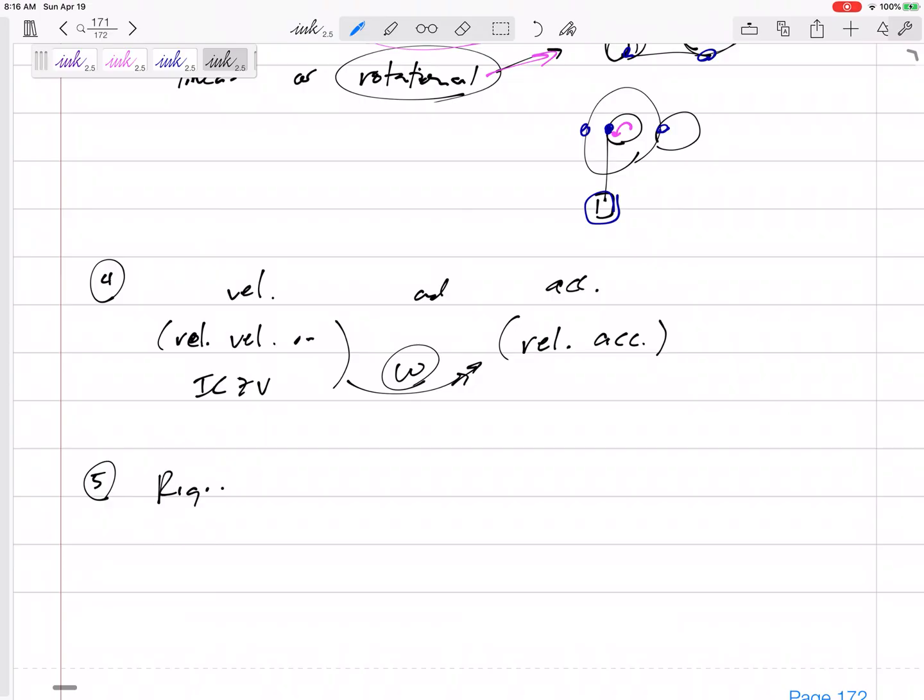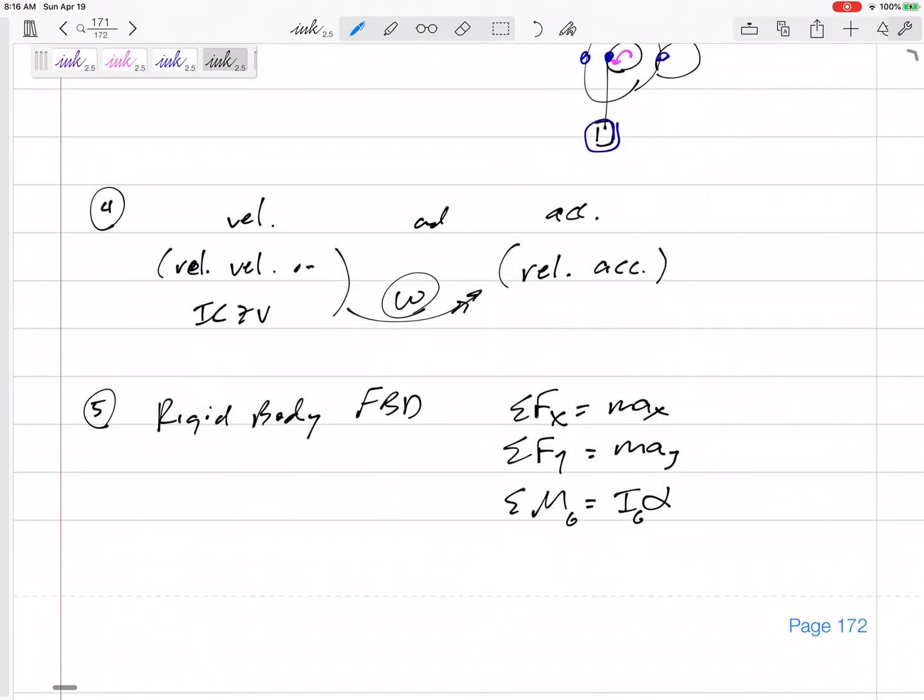All right, problem number five is a rigid body free body diagram, a rigid body free body diagram, where we are summing the forces in x equals m a x, we are summing the forces in y equals m a y, and then we are summing the moments equals i alpha. If we sum the moments about g, it's ig alpha. If we sum the moments about a fixed point, it's i about that fixed point alpha. But if we sum the moments about point p, it's ig alpha plus m a d. Remember those problems right there. But hopefully, you can just sum the moments about g.